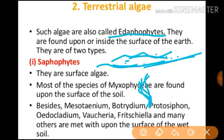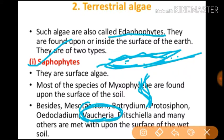Terrestrial algae can be divided further. The first subtype is sapophytes — these are surface algae. Most species of Myxophyceae are found upon the surface of the soil. Examples like Vaucheria and Fritschiella are found on the surface of wet soil. We call them sapophytes.